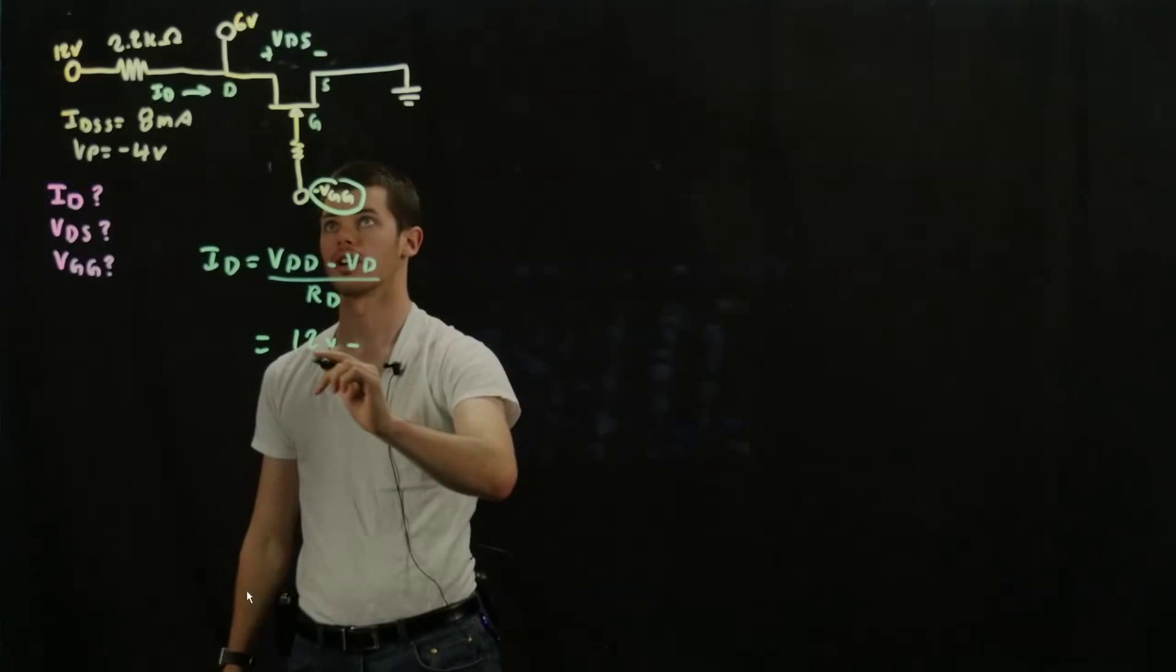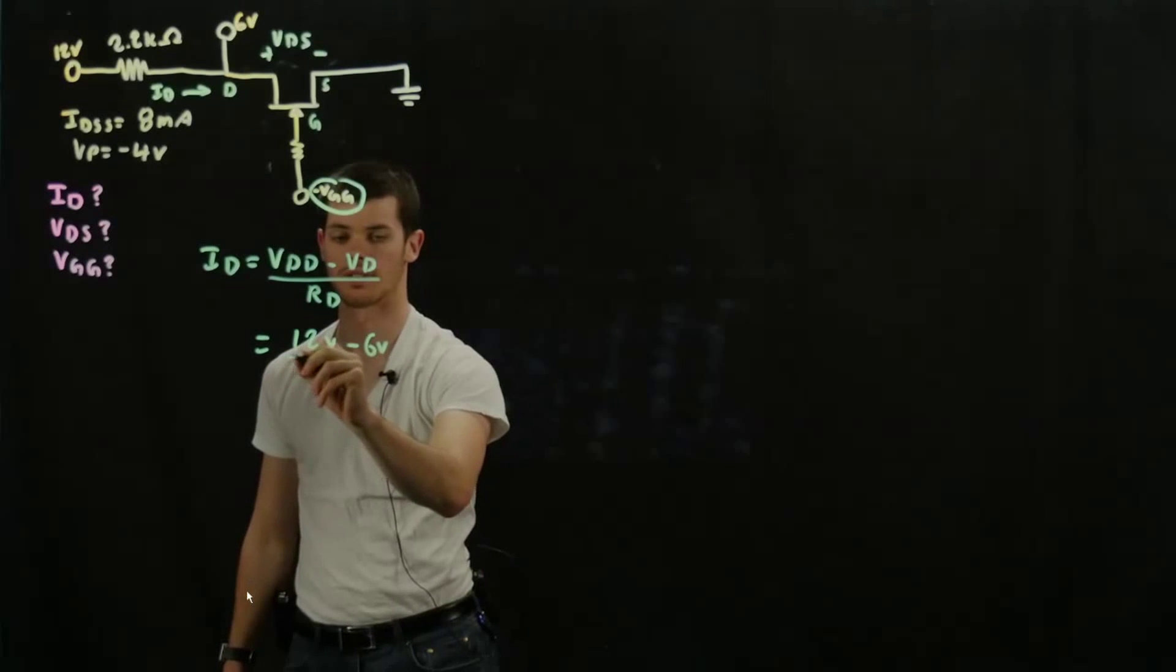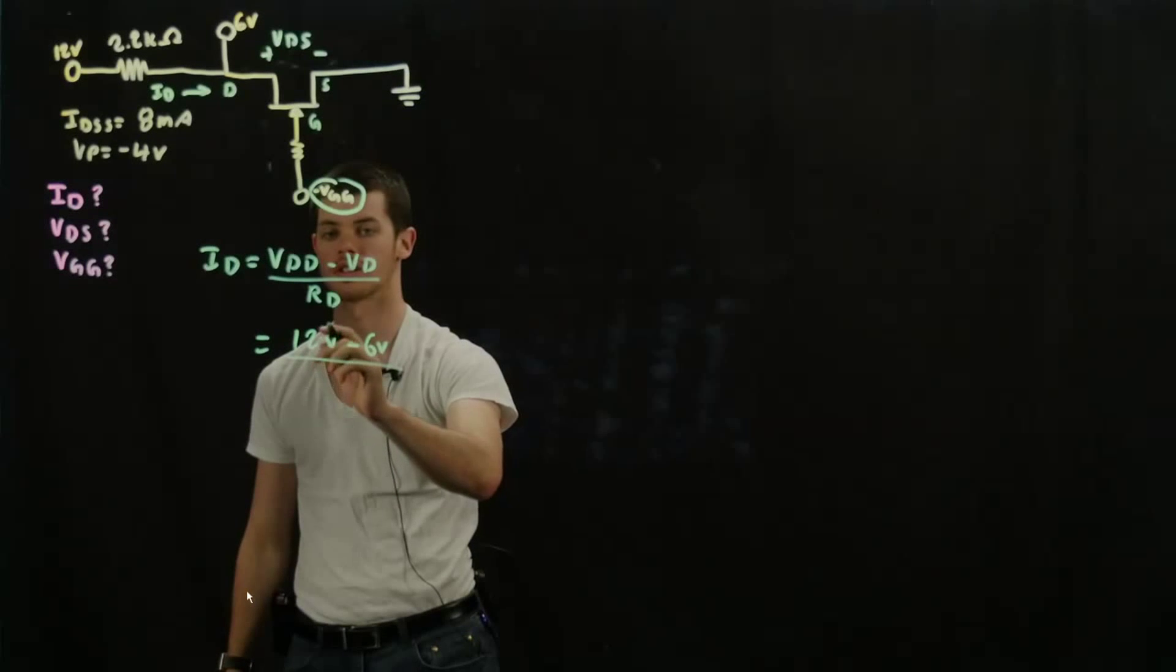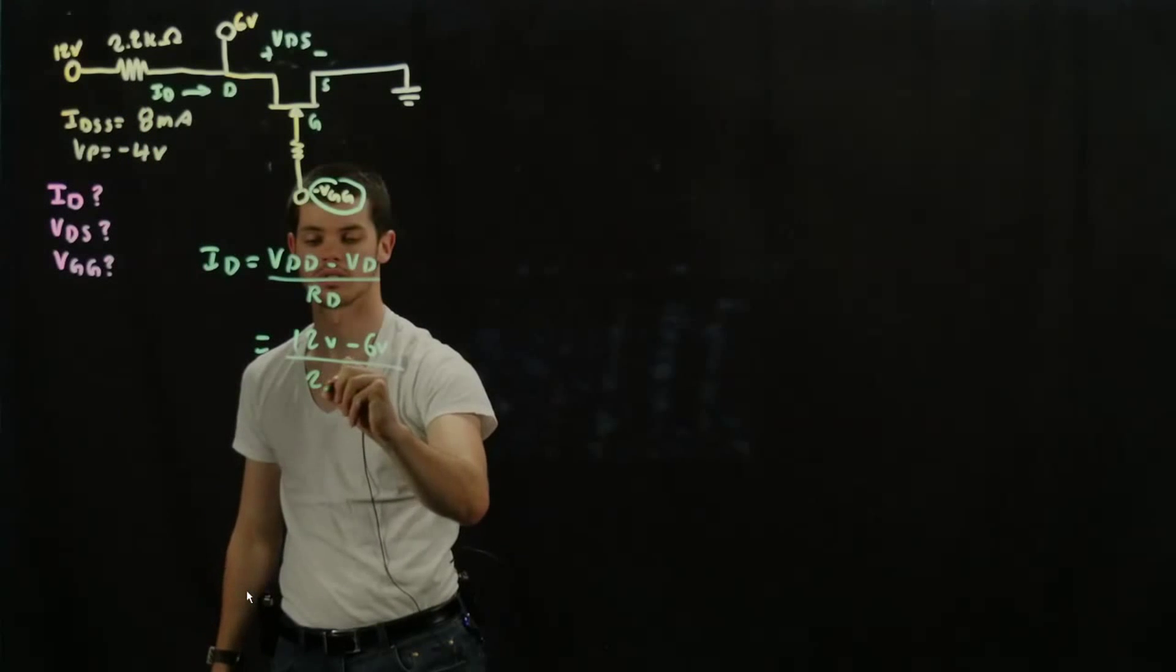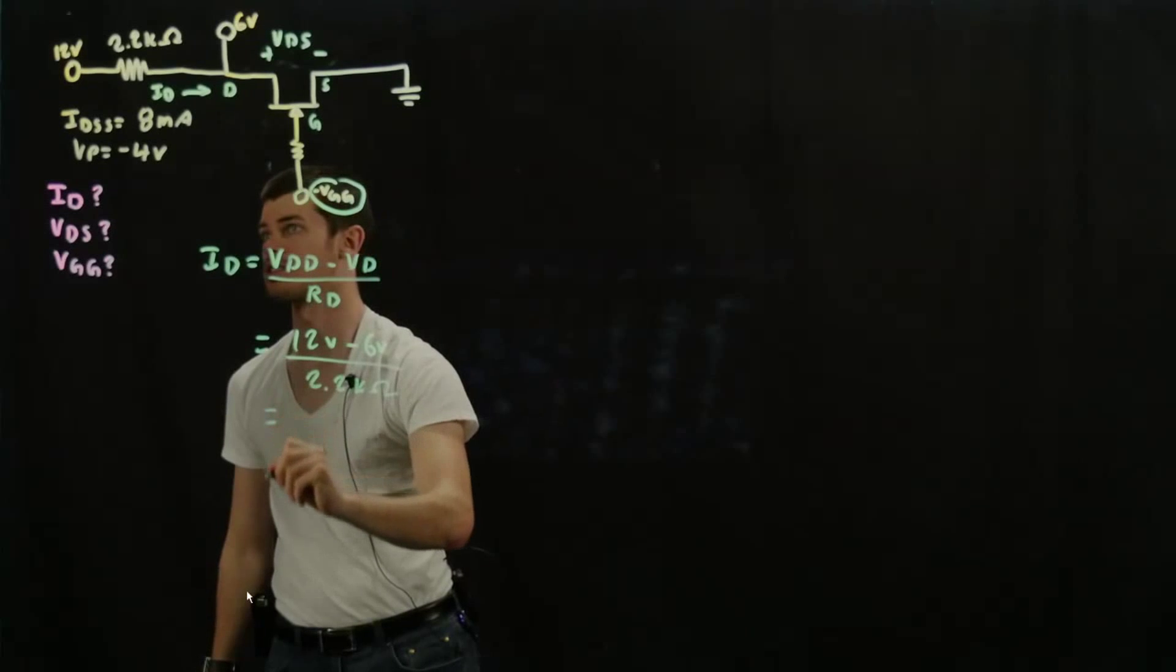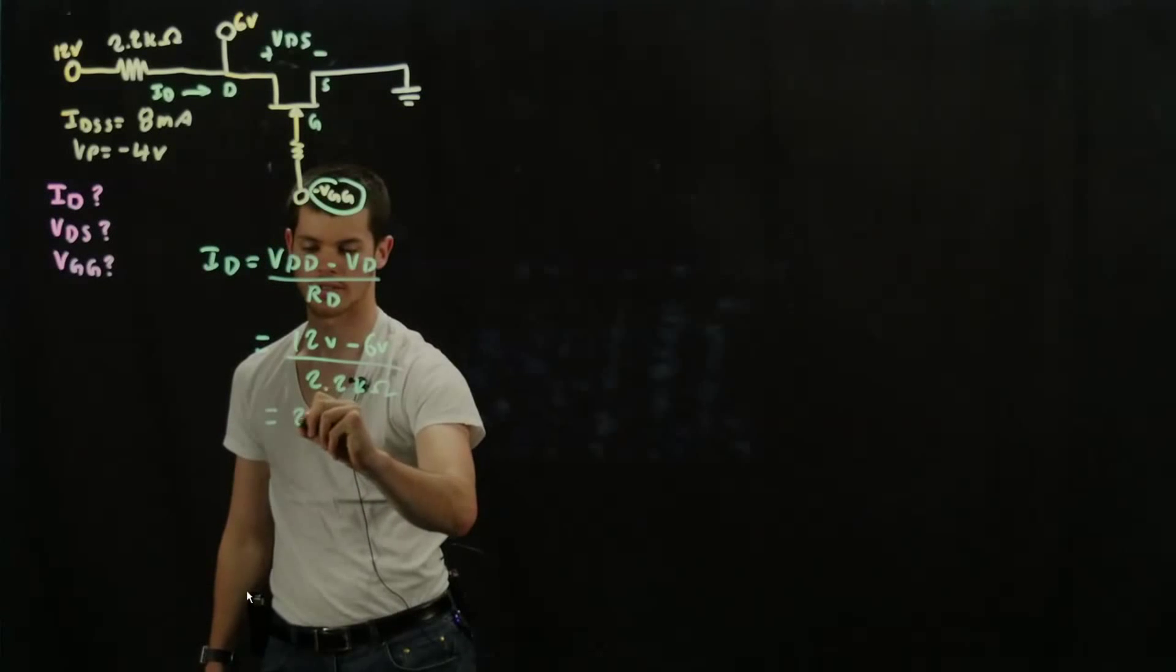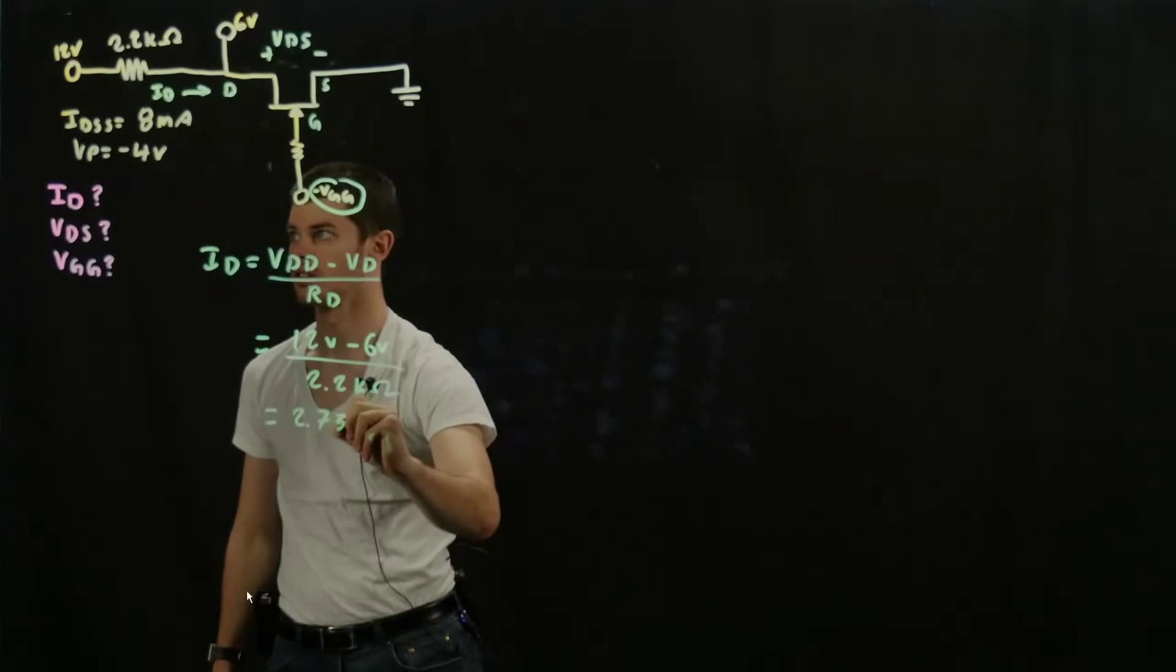So we're going to have 12 volts here minus the voltage at the drain, which is 6 volts. We're going to divide all of that by the resistance at D, which is 2.2 kilo ohms. And that's going to give us a value of around 2.73 milliamps.